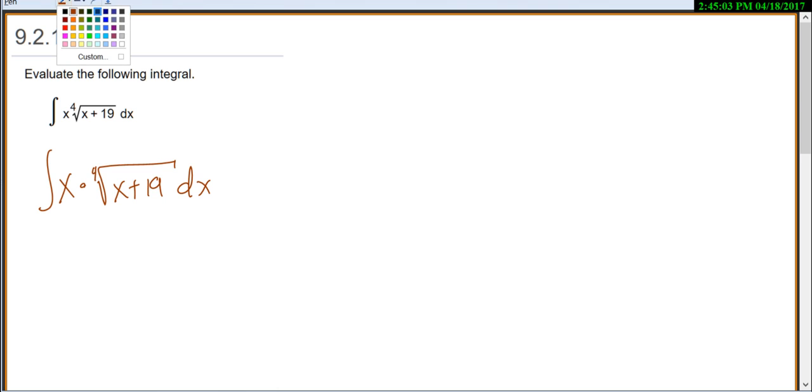Now some of you on your problem, this is just a normal square root, some of you it might be a 3rd root, some of you a 4th root. But I'm pretty sure that number is supposed to go with the root sign and not with the x. And so really then this is x times x plus 19 to the power of 1/4 dx.